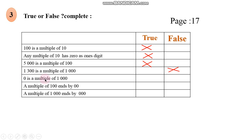0 is a multiple of 1,000 — true, because 0 is a multiple of all numbers. A multiple of 100 ends with 2 zeros — it's true, because the multiples of 100 end with 2 zeros. A multiple of 1,000 ends with 3 zeros — also true.